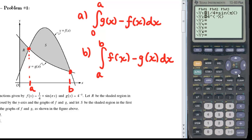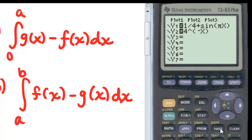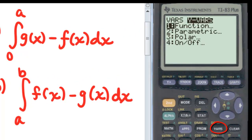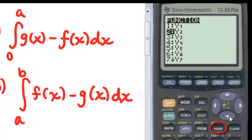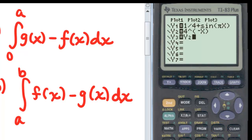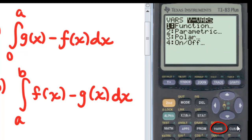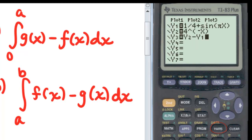Now what I'm going to do is I'm going to enter in the difference of the two functions. I want to do the G function minus the F function, in other words, Y2 minus Y1. Go to the vars key and over to Y vars function, and I'm going to select Y2 minus vars over to Y vars function, Y1.